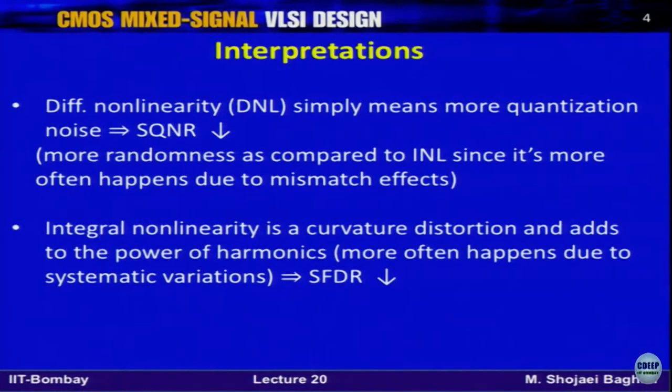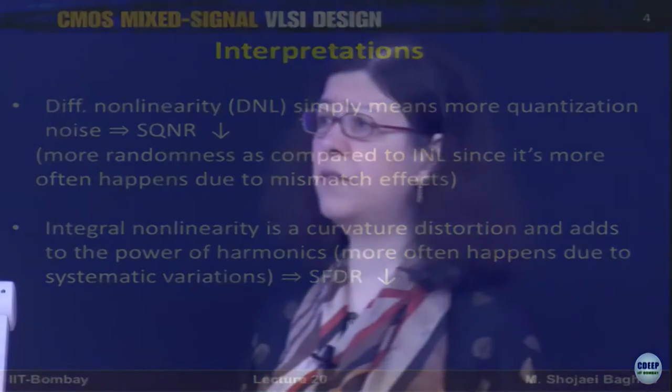The first question was: assuming we have a differential architecture, what will happen if we have mismatch? Mismatch is one of the reasons we see DNL. One response was that you will see even harmonics grow, which is true. Therefore, if a data converter shows severe DNL issues, you will naturally see even harmonics grow.